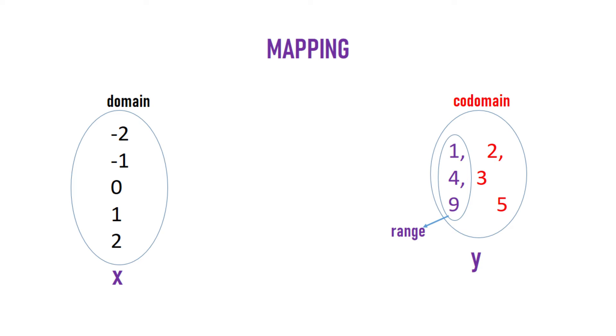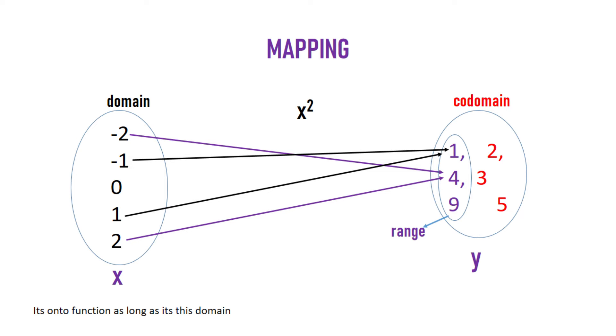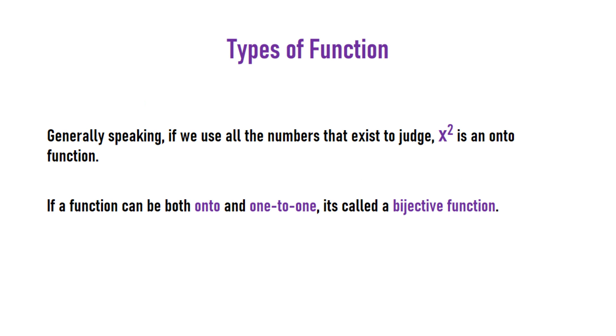If we map with x squared, you'd realize that 2 and -2 both map to 4, and -1 and 1 both map to 1. Two values mapped to one, so this is an onto function within these domain values. Generally speaking, using all numbers, x squared is an onto function. If a function can be both one-to-one and onto, it's called bijective.